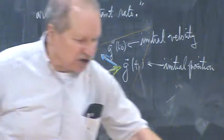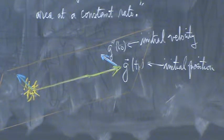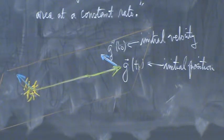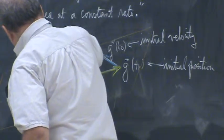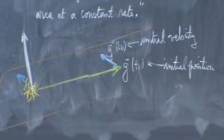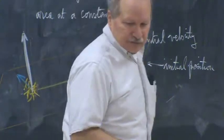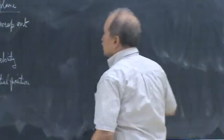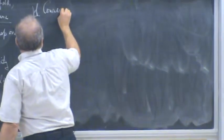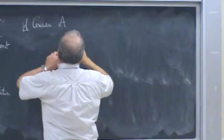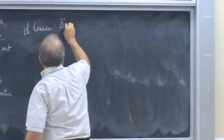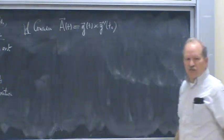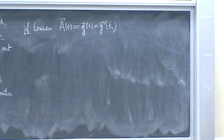If you're in three-space, what's the easiest way to think of a plane? A normal vector — you need a point the plane passes through (in this case the origin) and a normal vector. The candidate for the normal vector to this plane is the cross product of these two vectors. So I'm going to consider a vector A of t, which is the cross product of the position vector and the velocity vector of the particle.